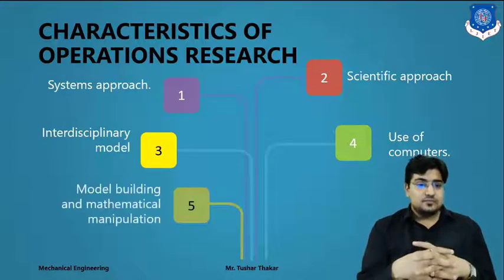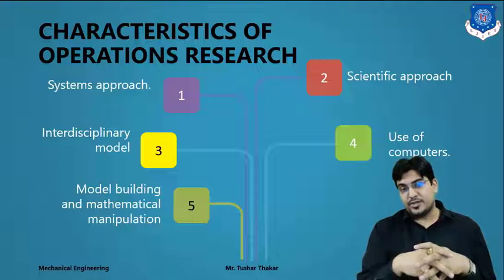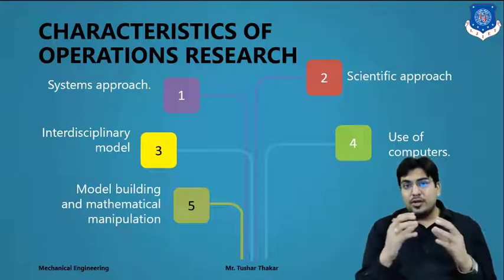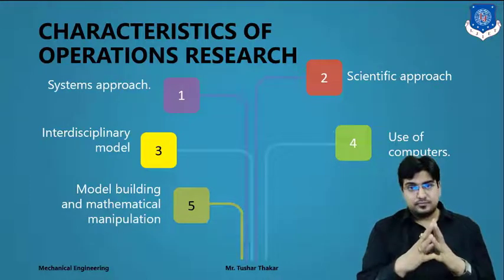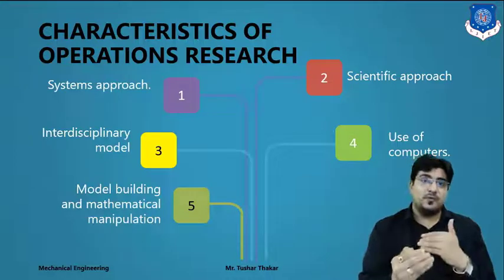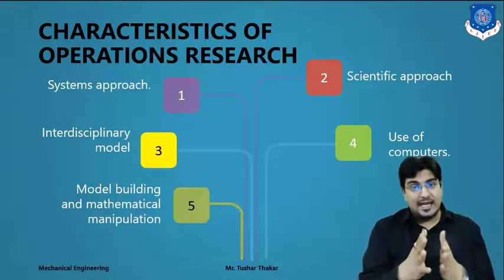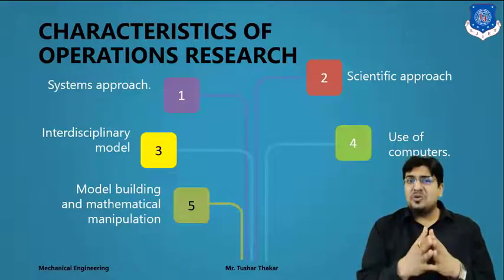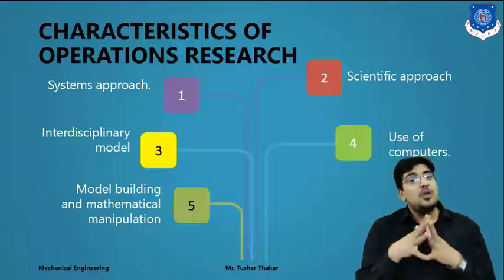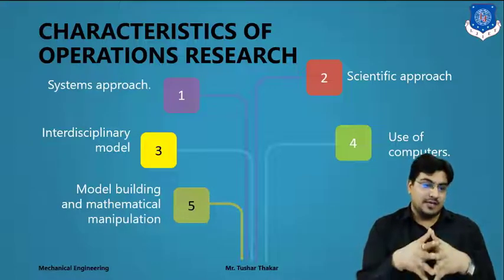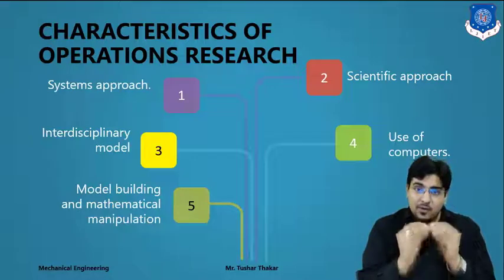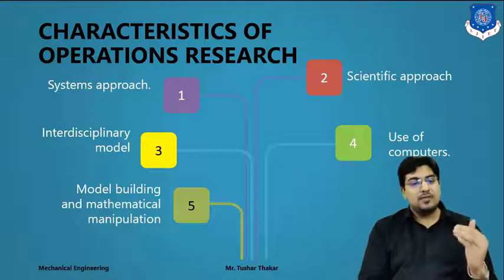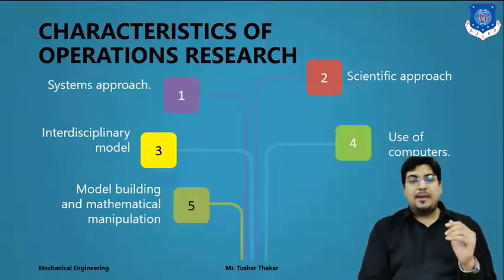The fifth characteristic is model building and mathematical manipulation. This involves mathematics — performing mathematical calculations, developing algorithms, and building software for particular applications. For example, to code an algorithm for inventory control, we apply mathematical manipulation and mathematical formulation. All of this falls under model building and mathematical manipulation.